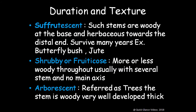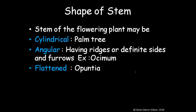Suffruticose stems are woody at the base and herbaceous towards the distal end, surviving many years — example: butterfly bush or jute. Shrubby (fruticose) plants are more or less woody throughout, usually with several stems and no main axis. Arborescent plants are referred to as trees — the stem is woody, well-developed, and thick.